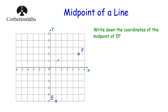Let's look at our next question. We've got point E at (1, -5) and point F at (5, 2), and we've been asked to find the coordinates of the midpoint of EF. We could use inspection by looking at the grid, but I'm going to add together the coordinates and divide by 2.